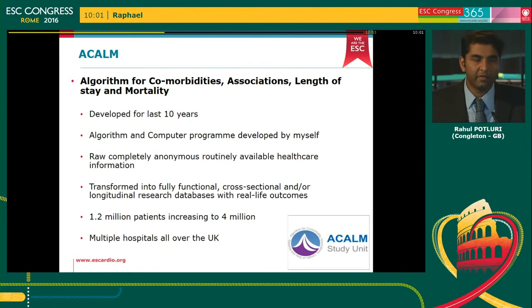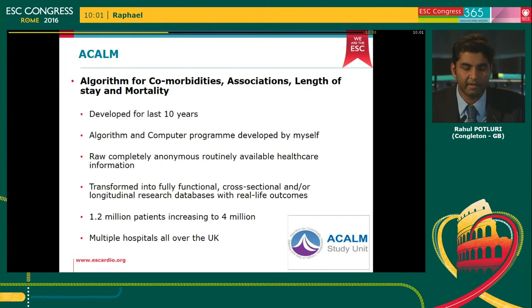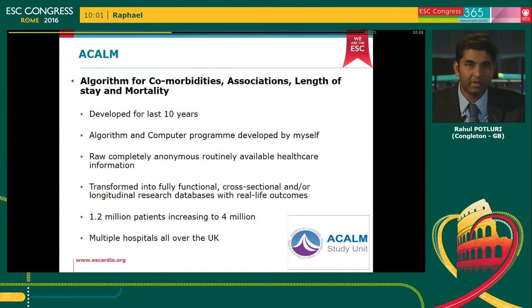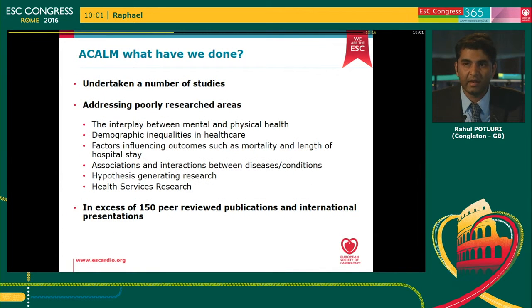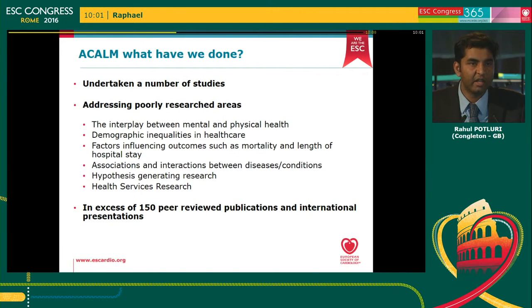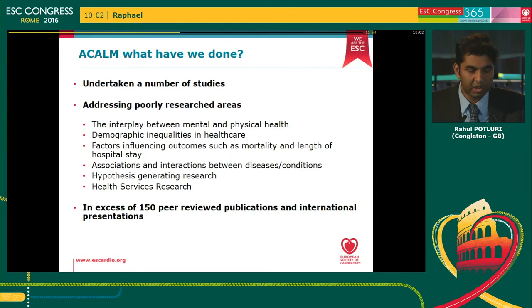I've founded a unit called ACOM, which stands for Algorithm for Comorbidities, Associations, Length of Stay, and Mortality. It's a computer algorithm I devised that transforms routinely available anonymous healthcare data into a fully functional cross-sectional and longitudinal research database with real-life outcomes. At the moment we have 1.2 million patients, increasing to around 4 million by the end of this year, including multiple hospitals all over the UK. We've undertaken studies addressing poorly researched areas such as mental health and physical health interplay, demographic inequalities, factors influencing mortality and length of hospital stay, associations between diseases, and hypothesis-generating research. We have in excess of 150 peer-reviewed publications and international presentations to date.